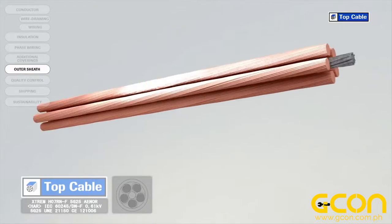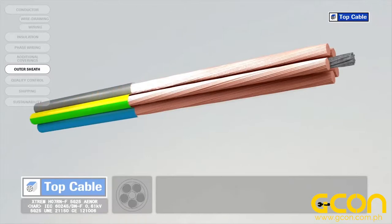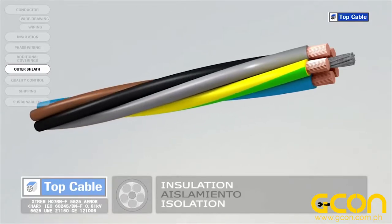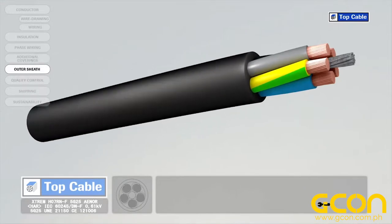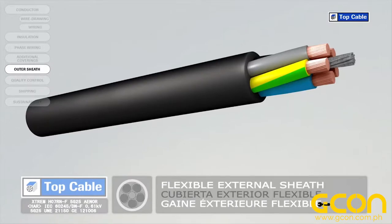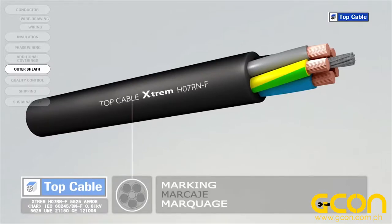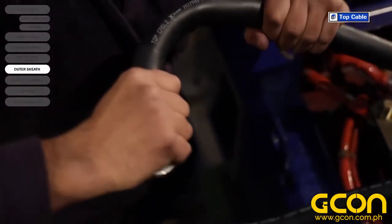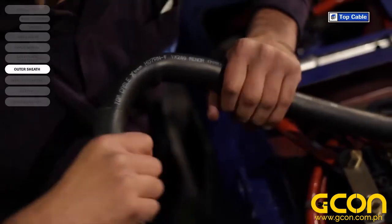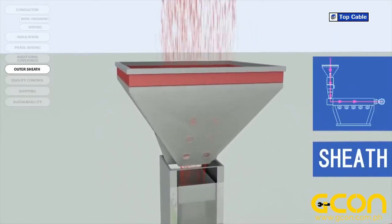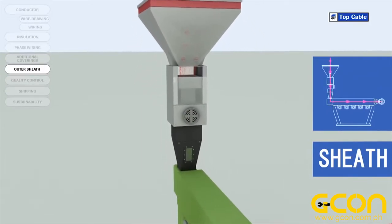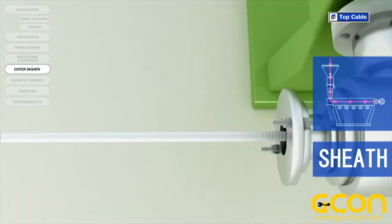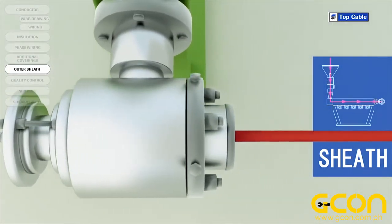Cables usually have an outer polymer covering for protection. This is called the outer sheath. The sheath protects the conductors and their insulation from external elements which may change their electrical properties, such as moisture. It also protects them from mechanical aggression which may occur during the installation of the cable. As with the insulation, the outer sheath can be made from a thermoplastic or a thermosetting plastic. The outer sheath is applied like the insulation via a process of extrusion at high temperature. The sheath may be made from different materials depending on the required protection level, the final flexibility of the cable, and the work environment.